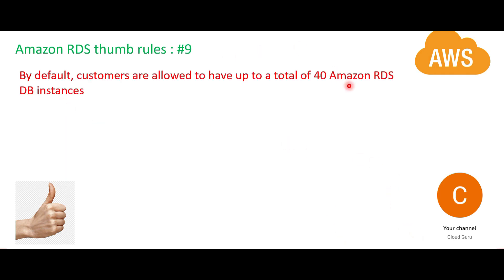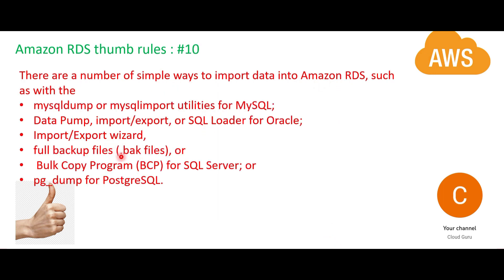By default you can create 40 DB instances. For importing data into RDS from on premises, you can use tools like mysqldump, SQL import, SQL Loader for Oracle, full backup files, BCP for SQL Server, and pg_dump for PostgreSQL. Common exam questions involve mysqldump, SQL Loader, import/export, and BCP.